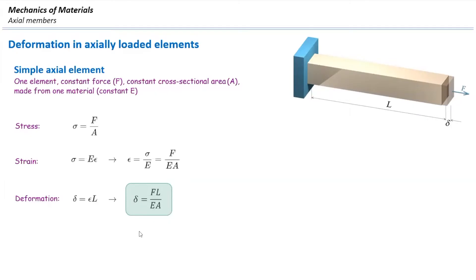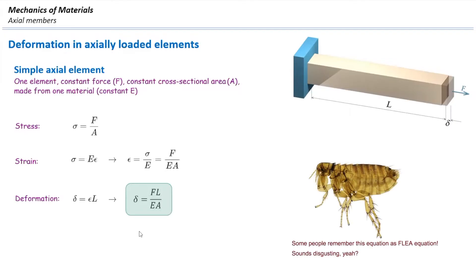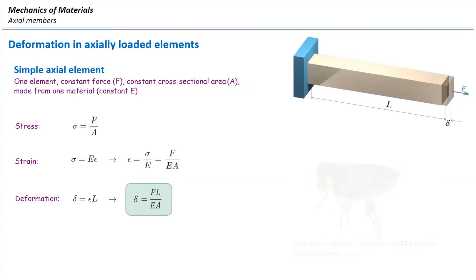This equation is known as the FL/EA equation, and it gives us the magnitude of deformation in a simple axially loaded element — an element that has a constant cross-section area and is subjected to a constant force. We want to determine how much is the total deformation in the entire length of the element. This is not new; I just wanted to prove it here.